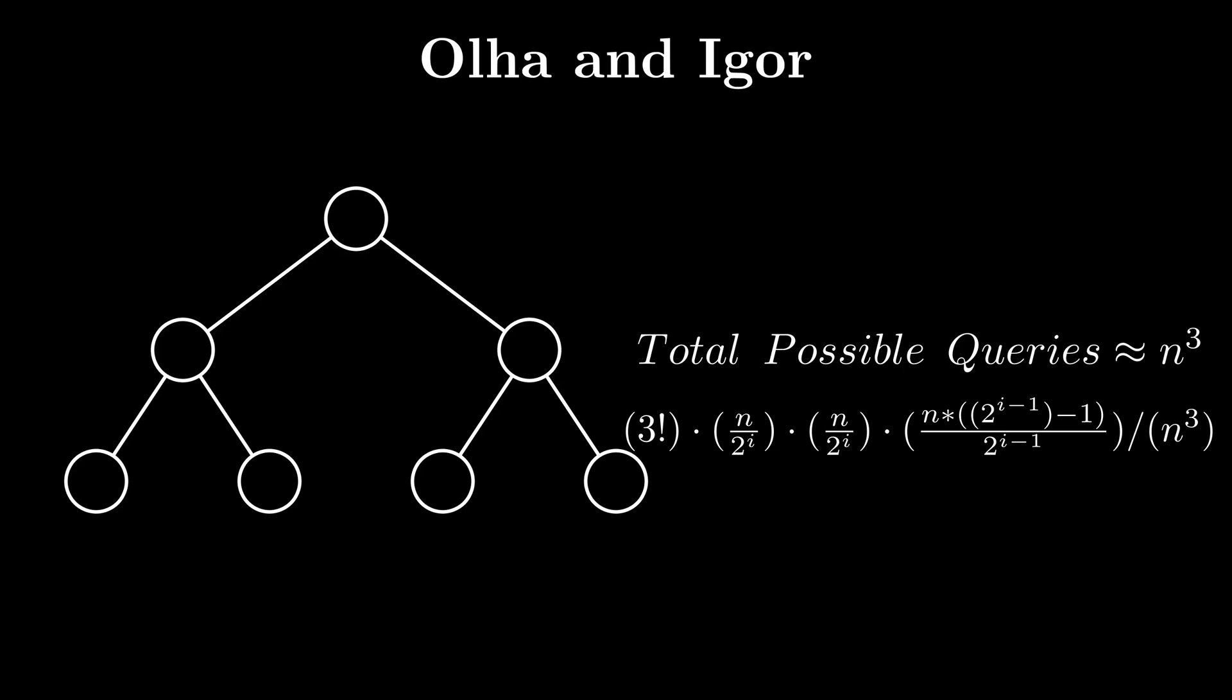There are 3 factorial ways to permute them about the triplet u, v, and w. Therefore, the probability is the product divided by n cubed, which ends up being 3 factorial by 2 to the power of i minus 1 minus 1 divided by 2 to the power of 3i minus 1.